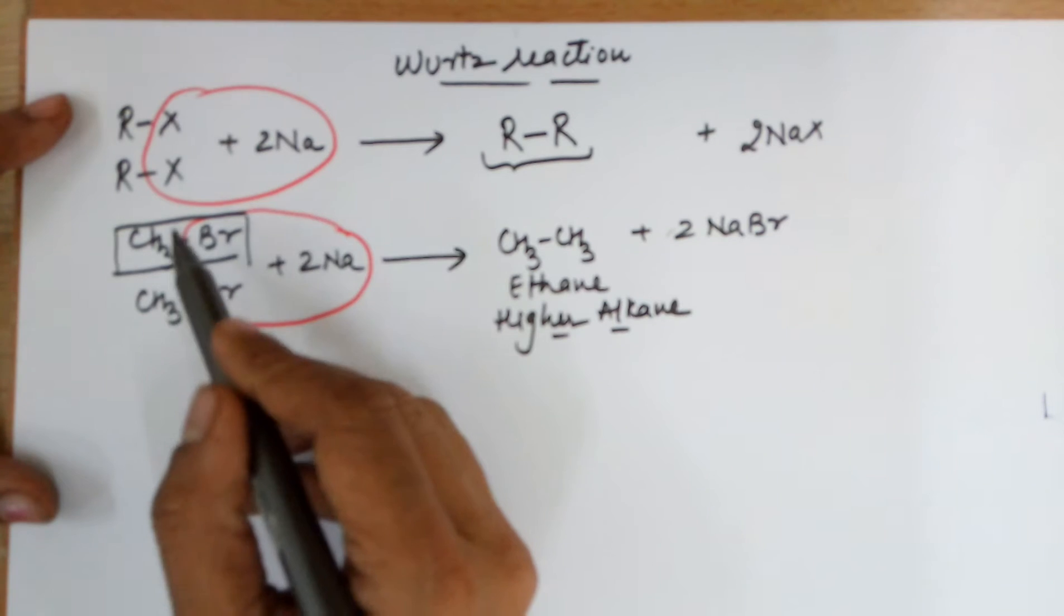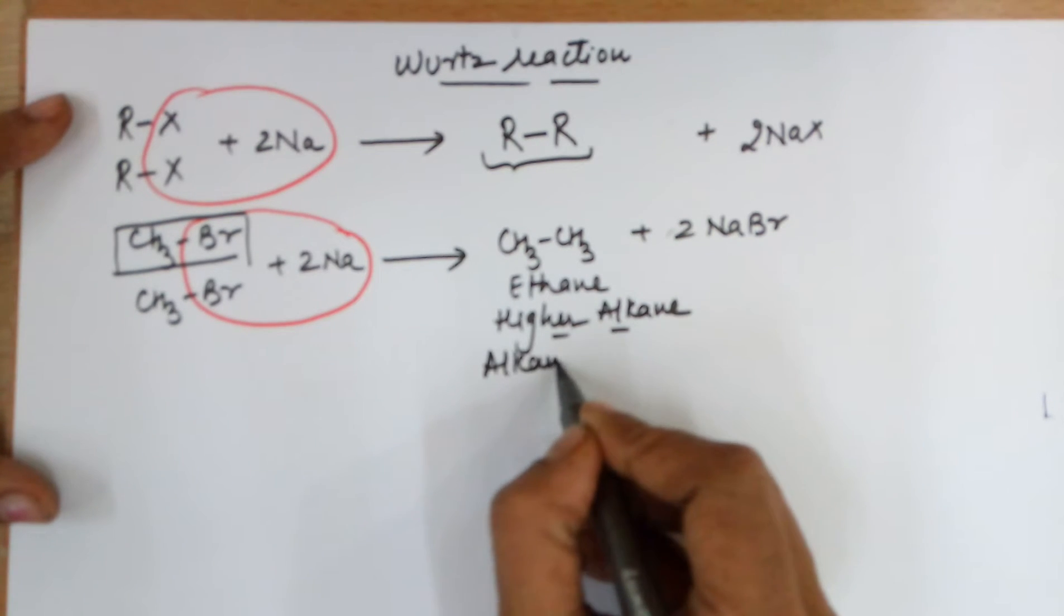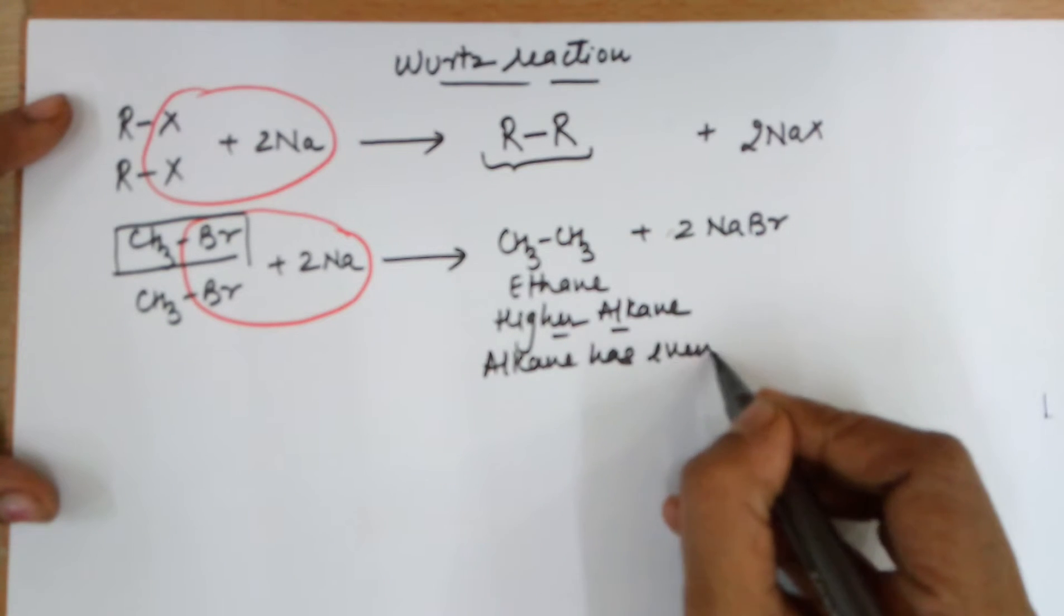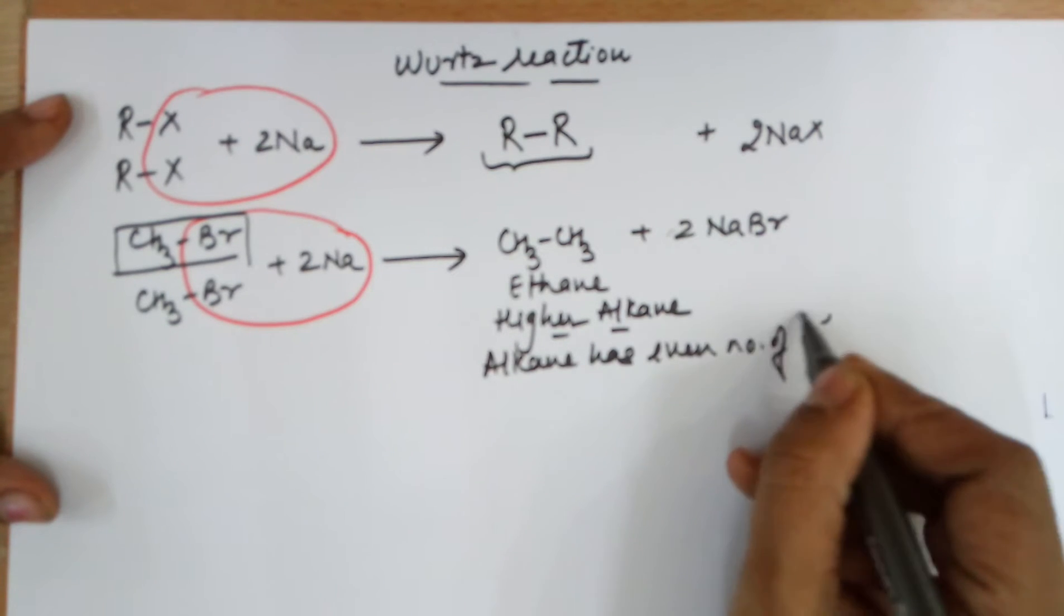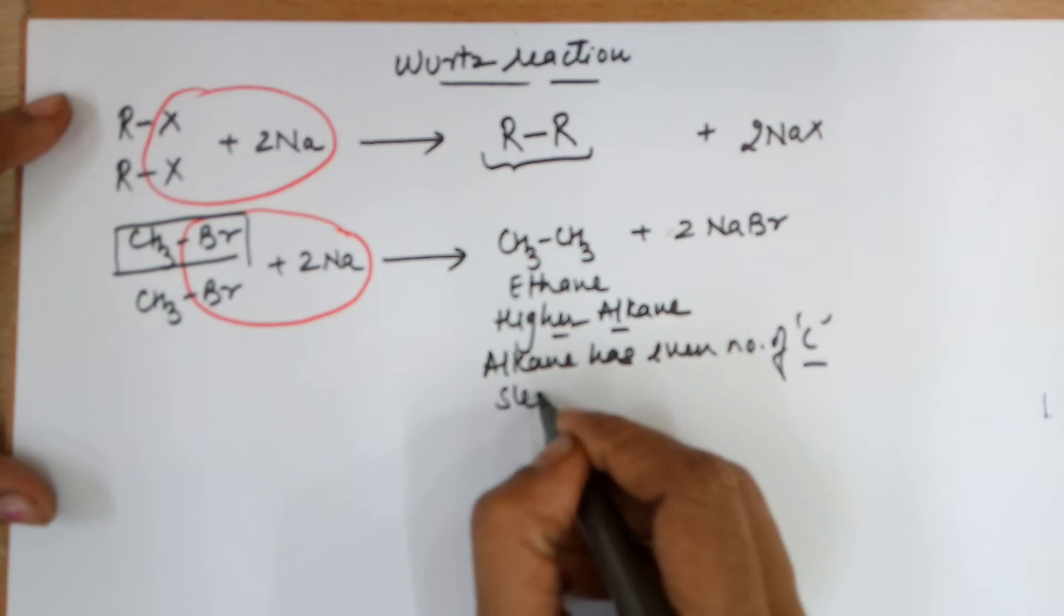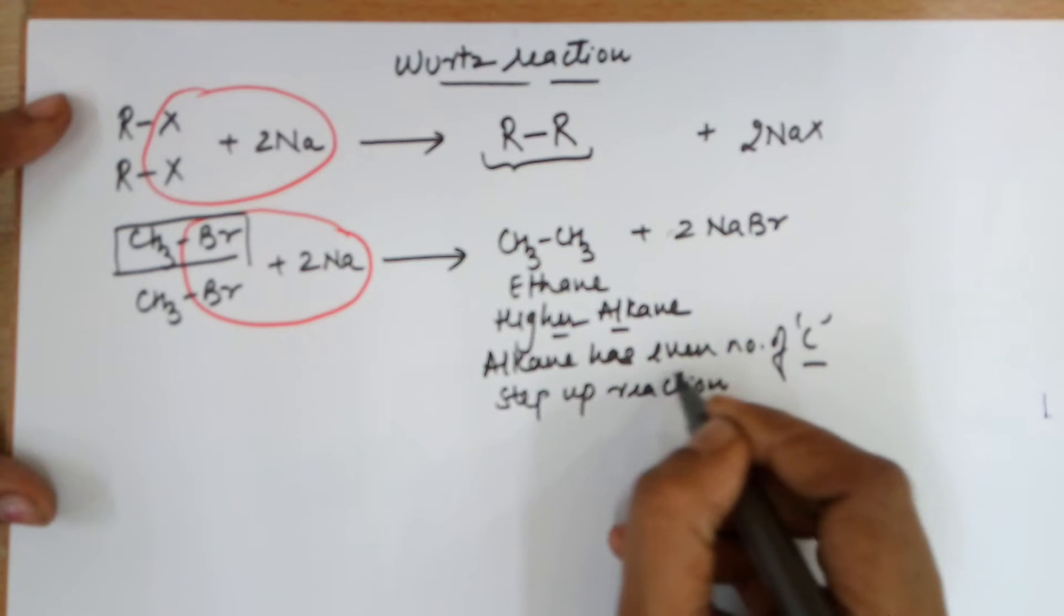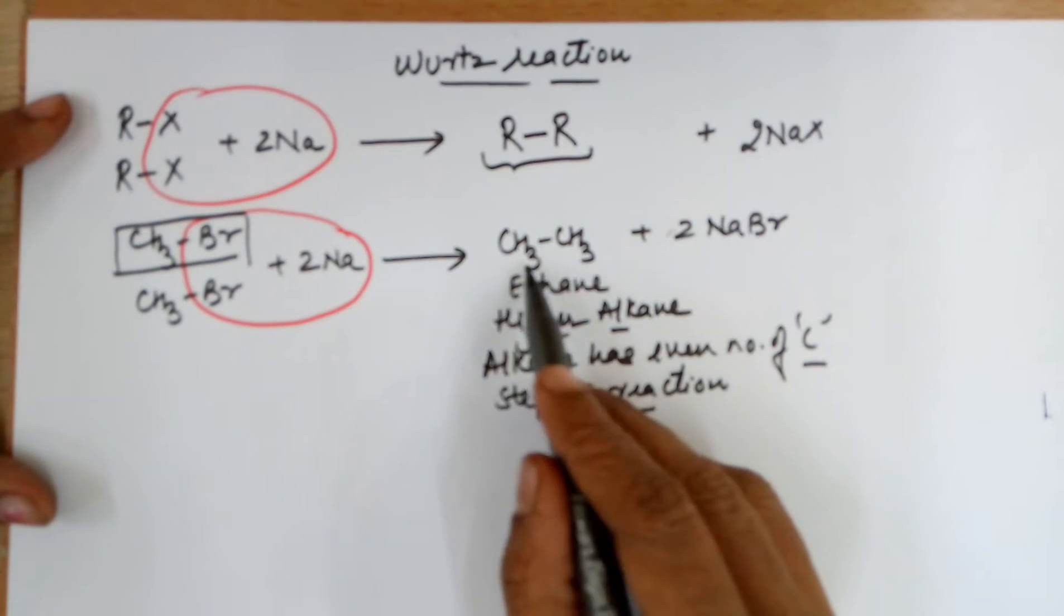Also, since it would always lead to a doubling up, therefore the alkane has even number of carbons in this reaction. This reaction is also known as a step-up reaction as you are increasing the number of carbons in the product.